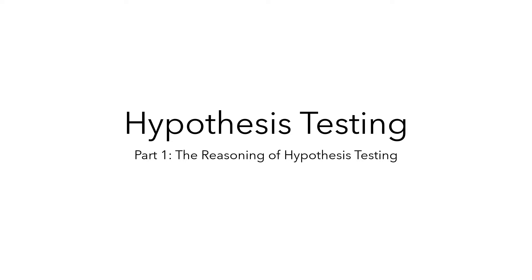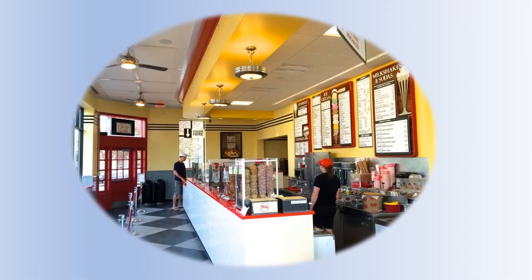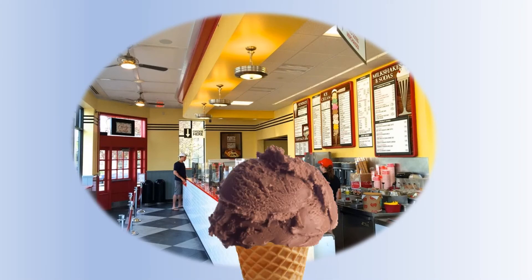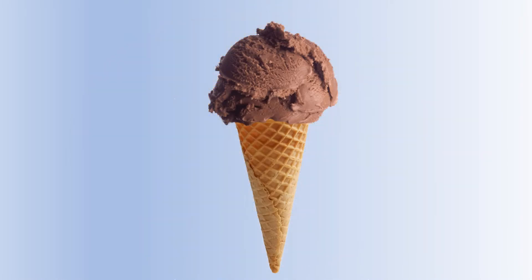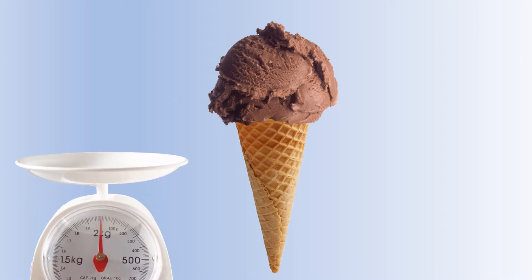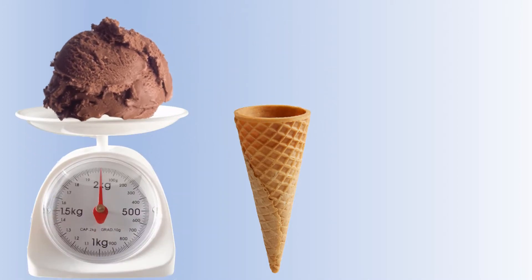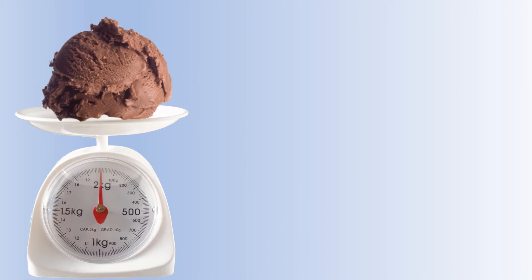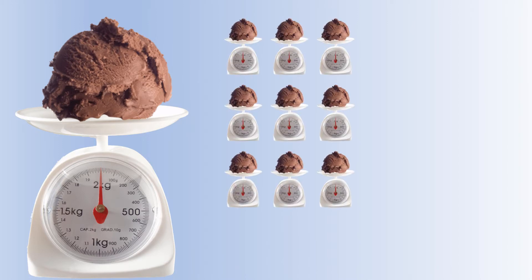In this video, I'll describe the reasoning of hypothesis testing. When you visit your local ice cream shop, you like to get one scoop of chocolate ice cream. The workers have been trained to measure their scoops precisely — they're each supposed to be four ounces. But you think the scoops look pretty large, so you decide to weigh the ice cream, and you do this each of the ten times you visit the ice cream shop.